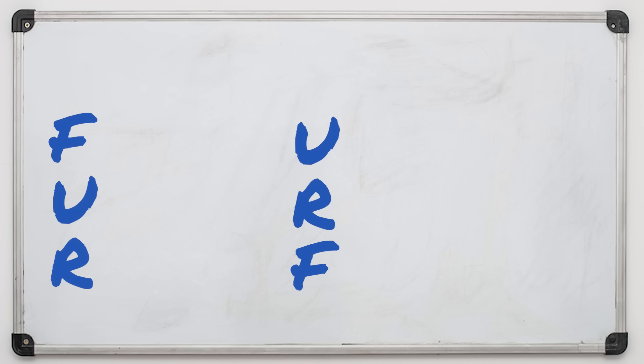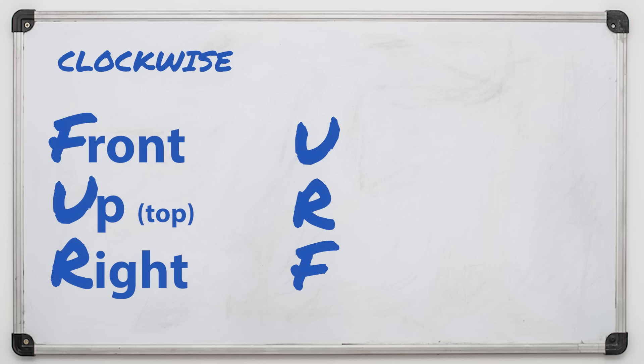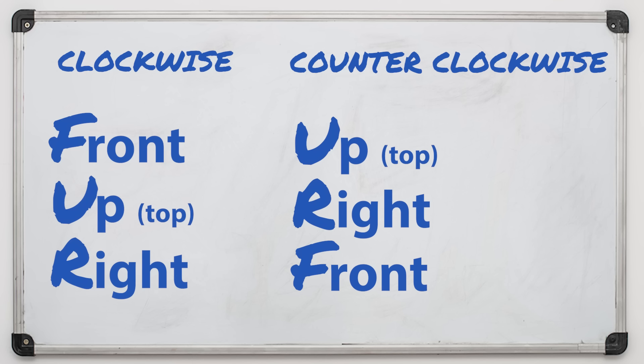Here are the moves for the yellow plus. Front, up or top of the cube, right. Those are your clockwise moves. Then we have our counterclockwise moves: up, right, and front. Pause the video and make sure you understand these moves before we continue.